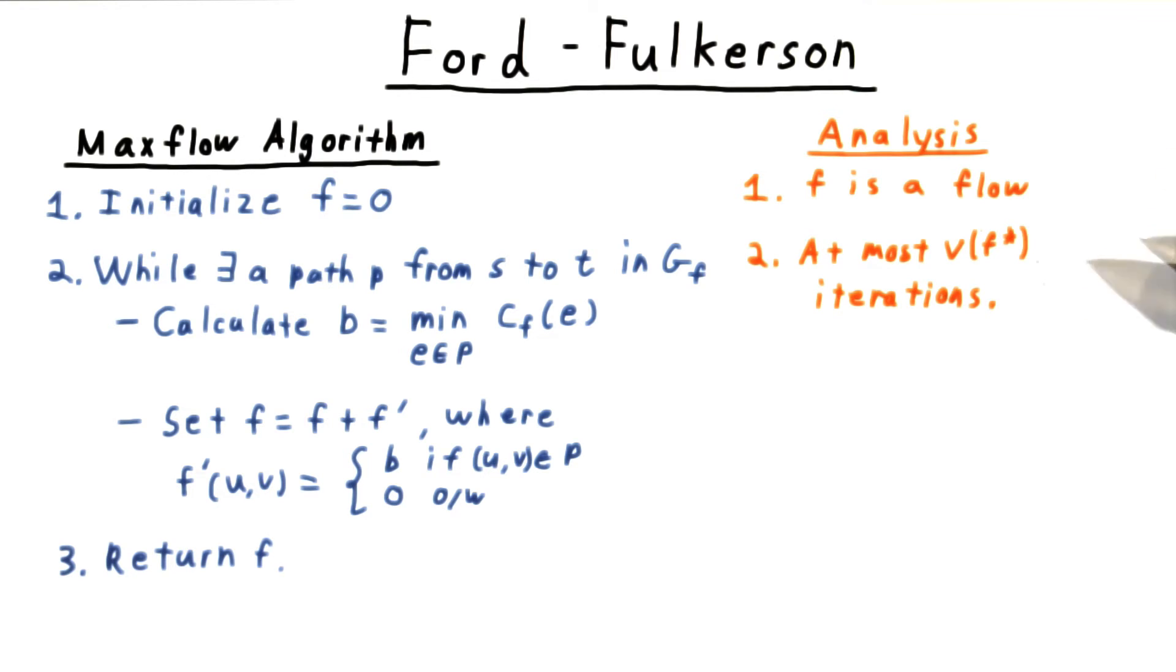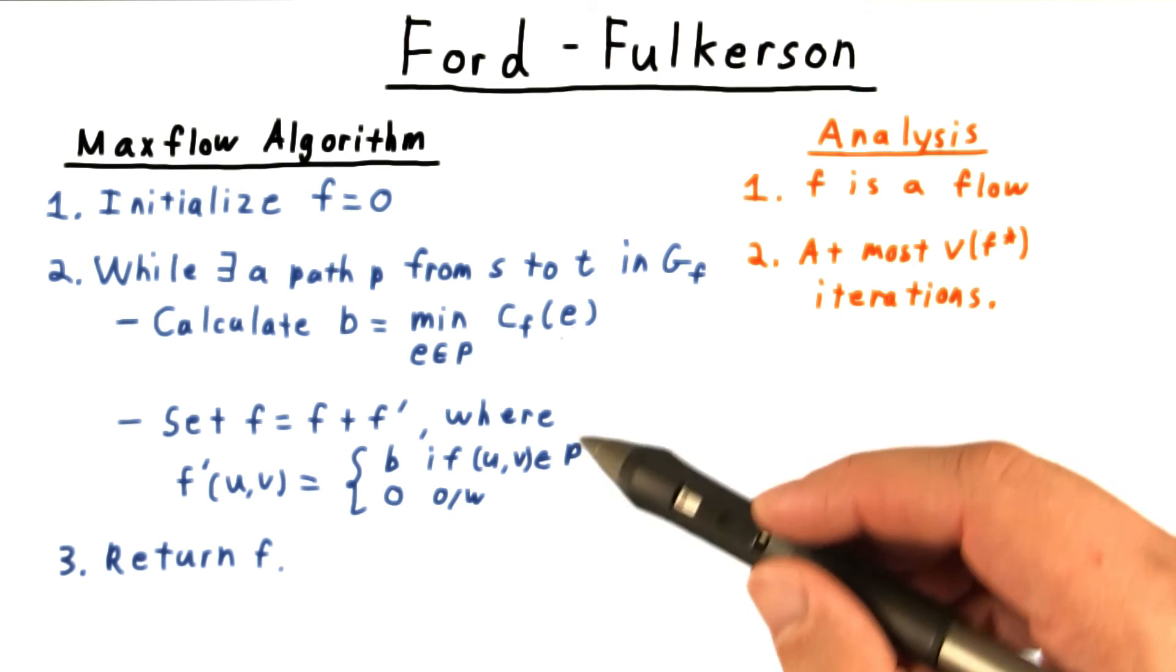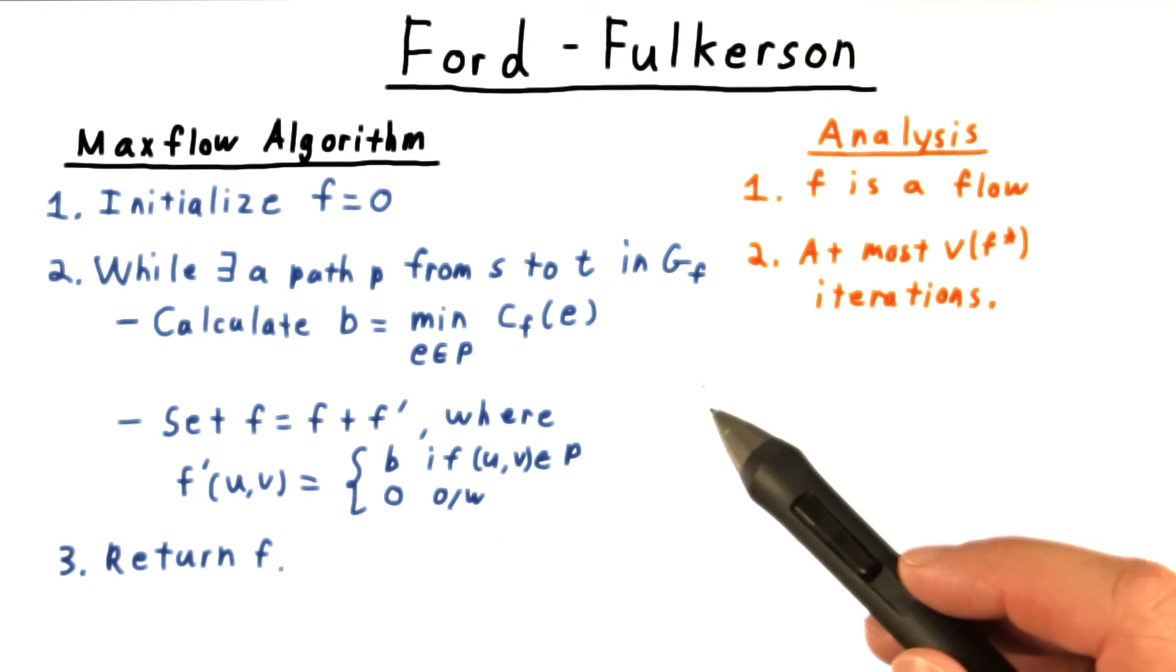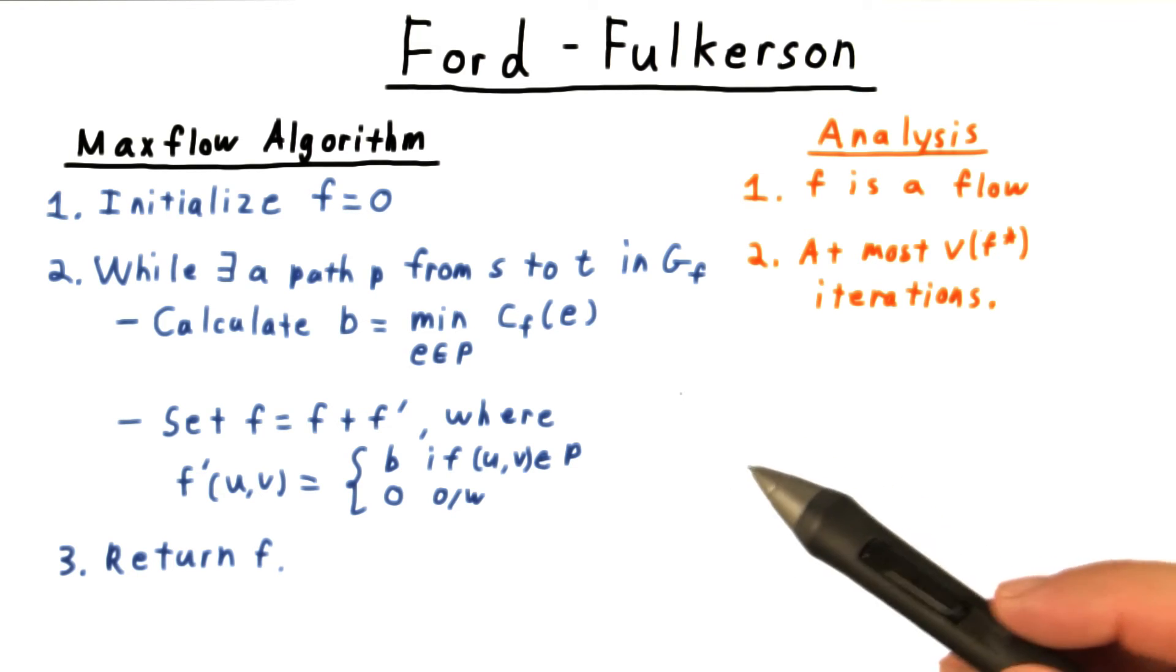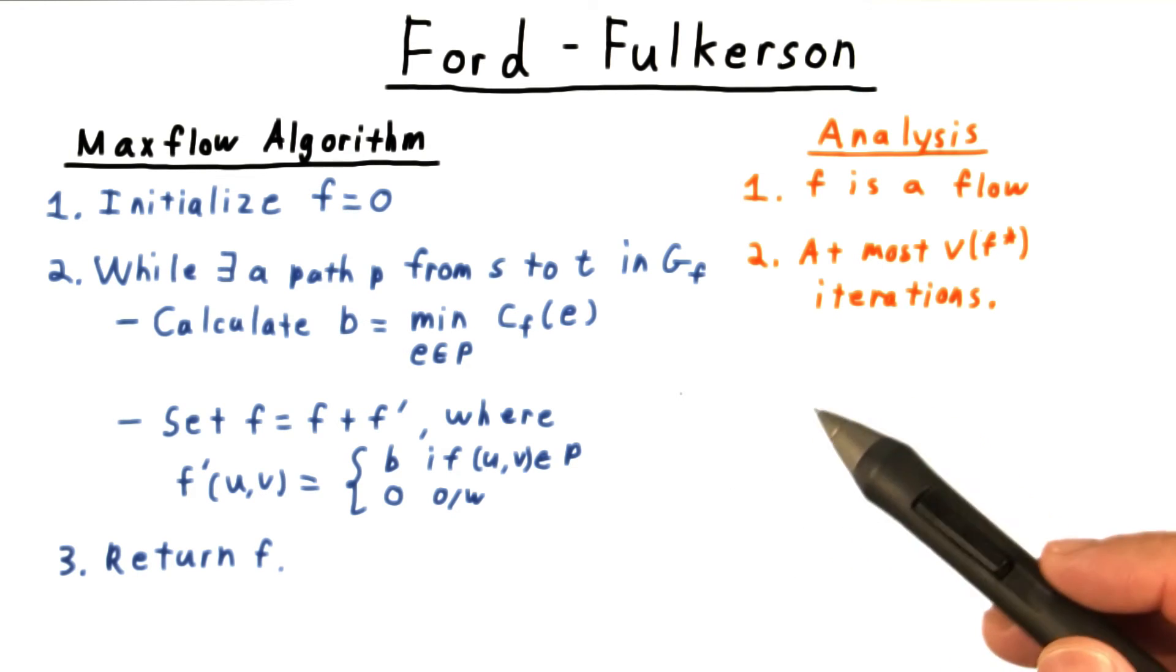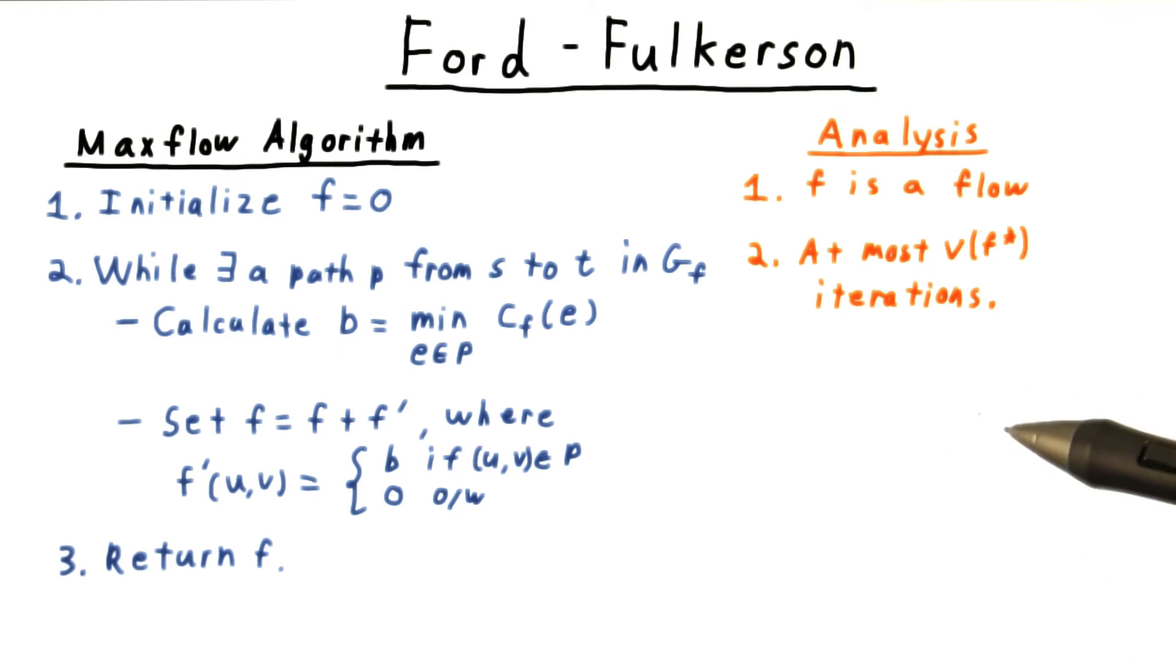Does the algorithm terminate? Well, remember that the capacities are all integral. So each augmenting flow, F prime, has to have a value of at least one. Otherwise, the path wouldn't be in the graph. Therefore, we can't have more iterations than the maximum value for a flow. So yes, it terminates.